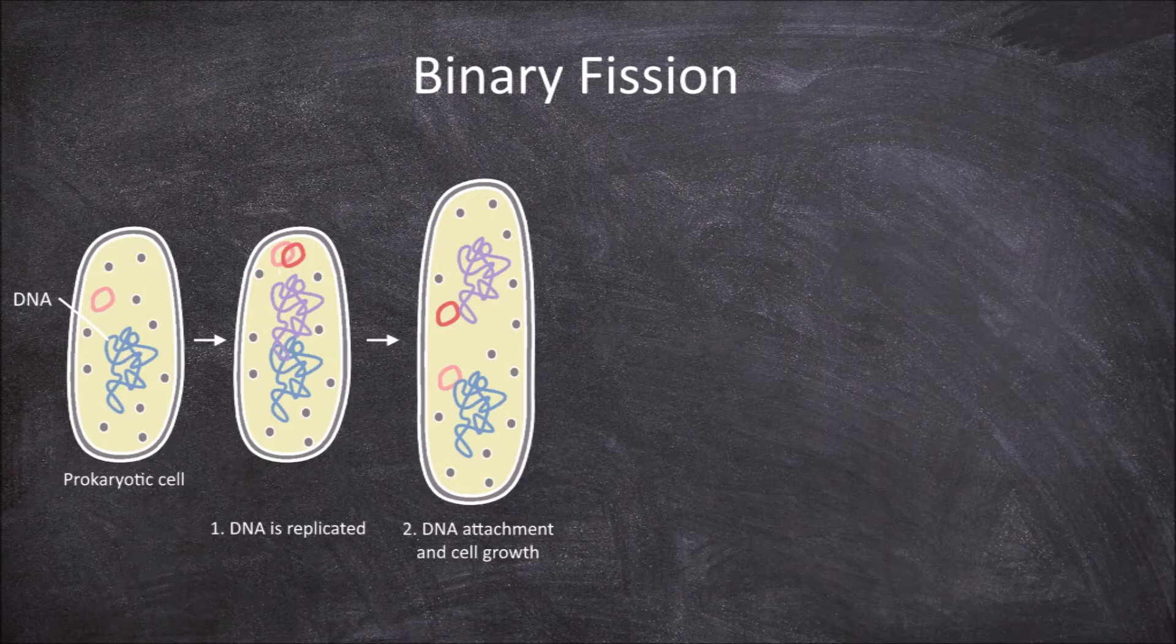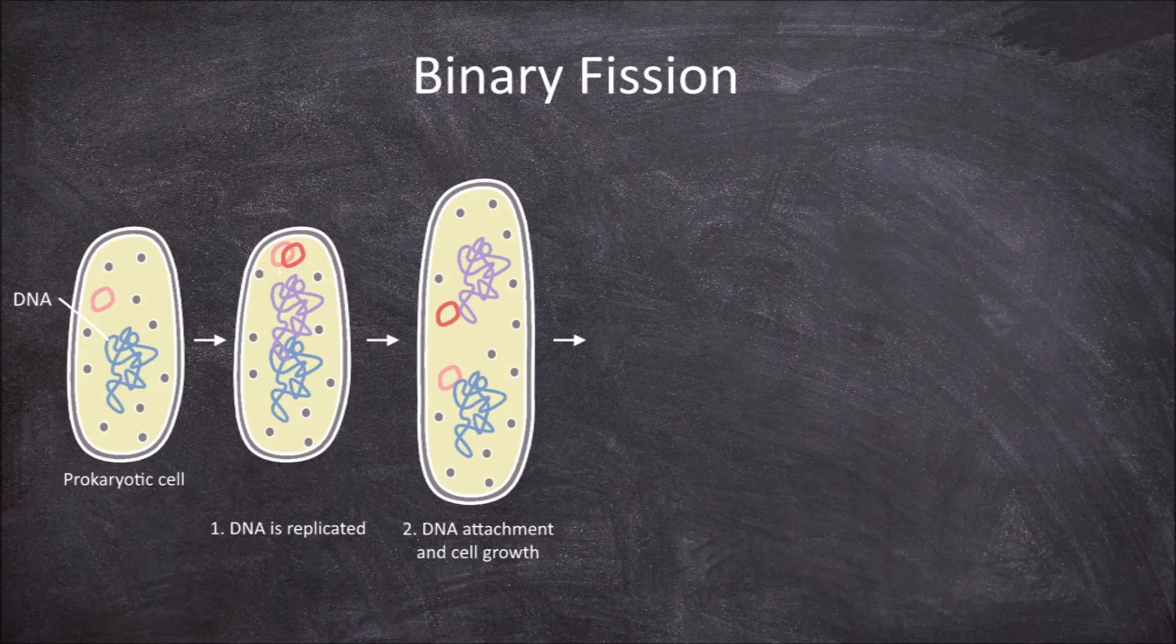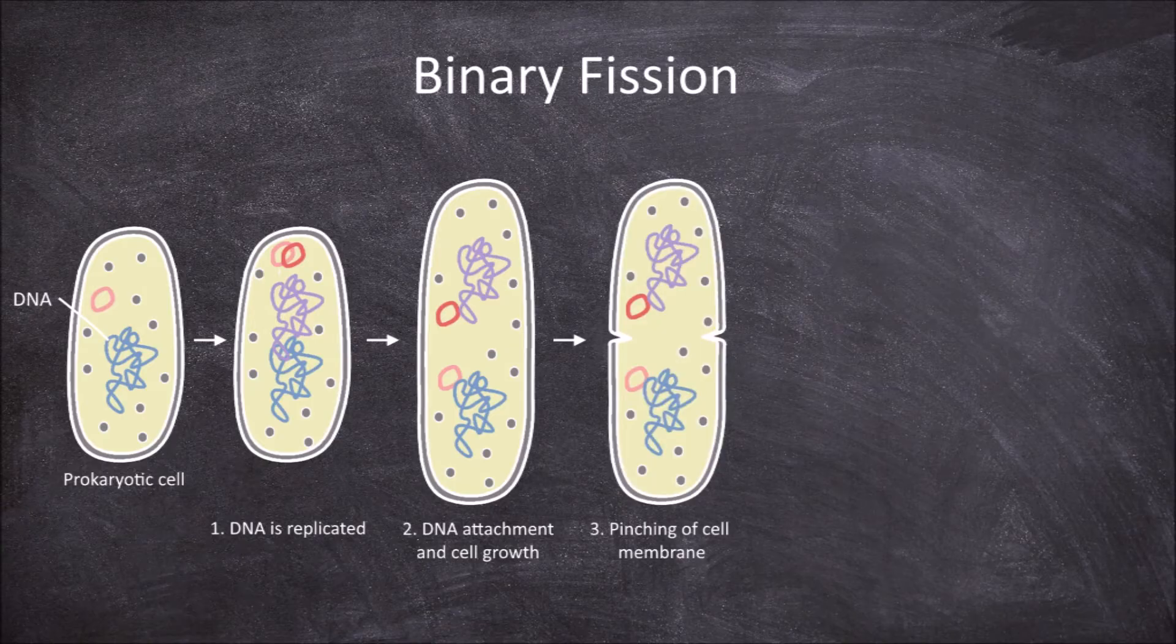At the same time, the cell grows and elongates by creating more cell membrane and cell wall. The third step involves the pinching in of the cell membrane.